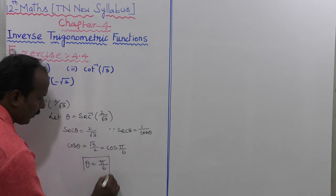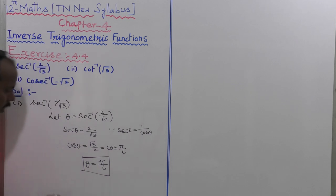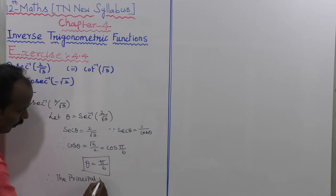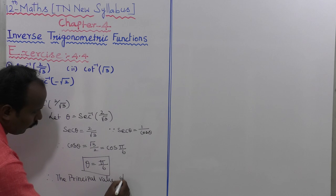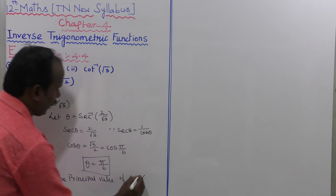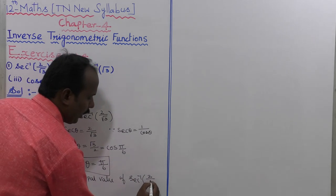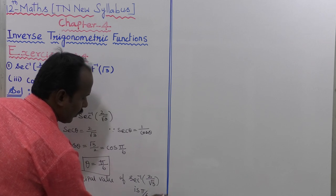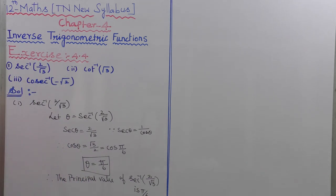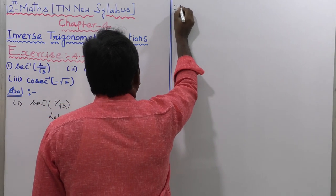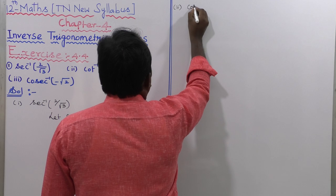Therefore, theta equals pi by 6. The principal value of secant inverse of 2 by root 3 is pi by 6. That is all — the first subdivision is completed.